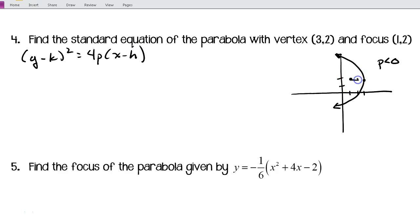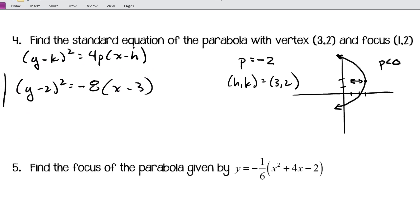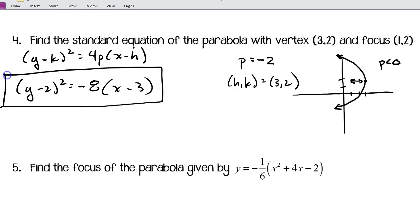I know that this distance between the focus and the vertex is going to be my value of p. So p is going to be negative 2. I've already got my vertex, my (h, k) is (3, 2). All I need to do to find the standard equation is substitute these values. So I'm going to have (y - 2) squared equals negative 8 times (x - 3). And there's your standard form of our parabola.